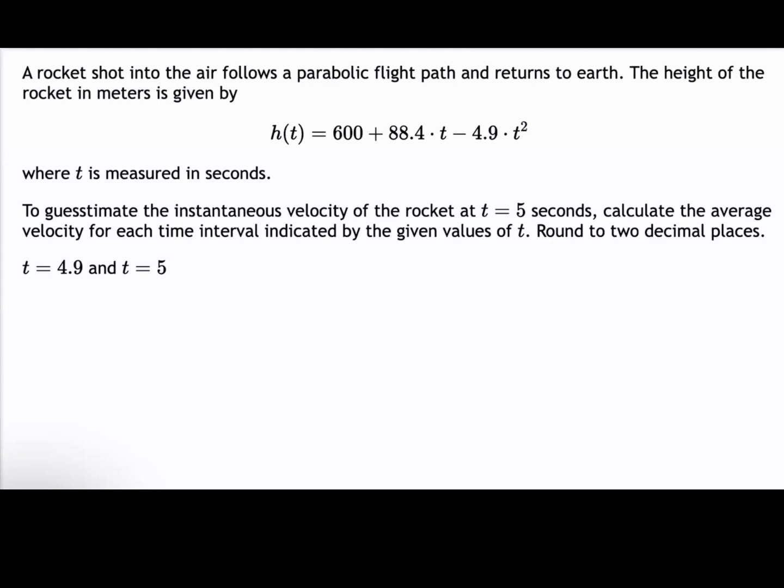The height of the rocket in meters is given by h(t) = 600 + 88.4t - 4.9t², where t is measured in seconds. To guesstimate the instantaneous velocity of the rocket at t = 5 seconds, calculate the average velocity for each time interval indicated by the given values of t. Round to two decimal places.